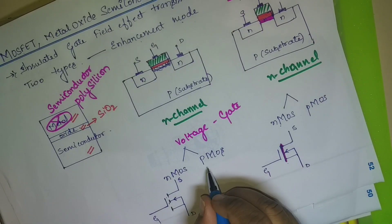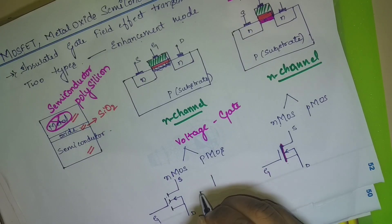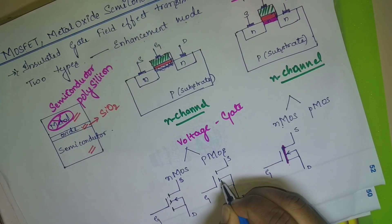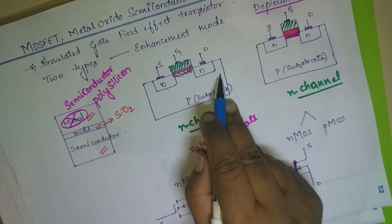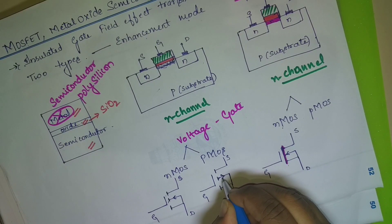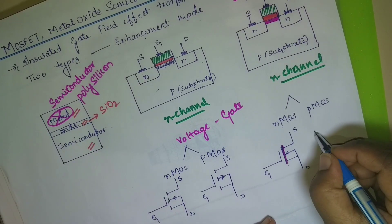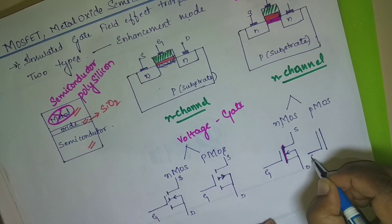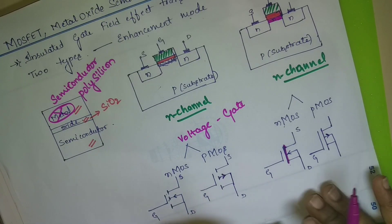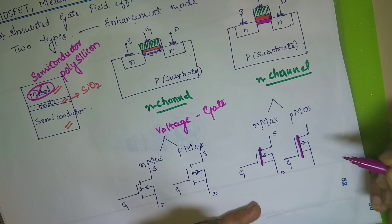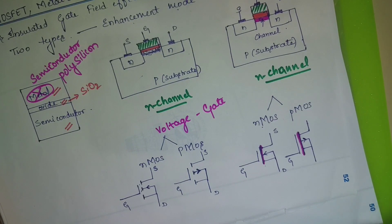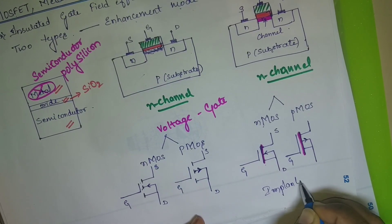To write PMOS, the simple change is: keep the structure as it is but change the direction of the arrow so that electrons are moving away from the gate. You have gate, source, drain, and the fourth terminal which is the substrate terminal. For PMOS depletion mode, you can write a thin line or show a thick line to indicate the channel or implant. The thick line shows the channel is already present.